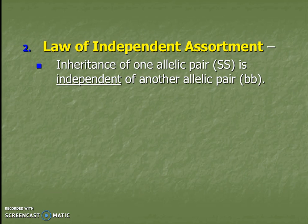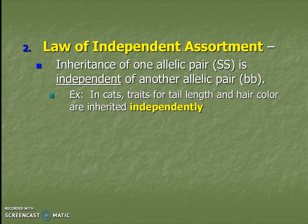The next law is the law of independent assortment. This means that the inheritance of one allelic pair is independent of another allelic pair — this is when we're talking about multiple traits at once. We're going to talk about cats: the trait for tail length — long tails or short tails — and the trait for hair color. Those different traits will be inherited independently of each other. This law of independent assortment is really about the independence of different traits.